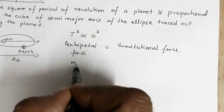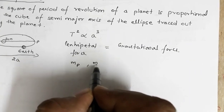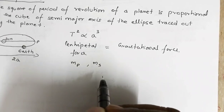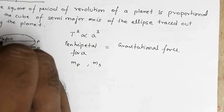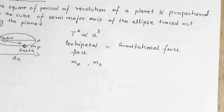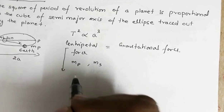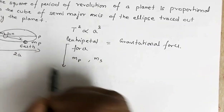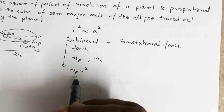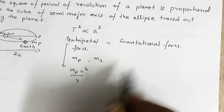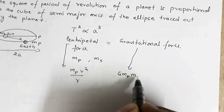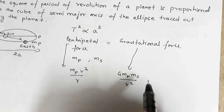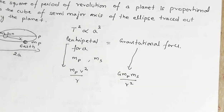Let MP be the mass of the planet and MS be the mass of the sun. This radius we take to be R, approximating the orbit as a circle. The expression for centripetal force is MP·V²/R, where V is the speed of revolution. The gravitational force is G·MP·MS/R². Since centripetal force is provided by the gravitational force, these two quantities must be equal. MP cancels out, giving V = √(G·MS/R).